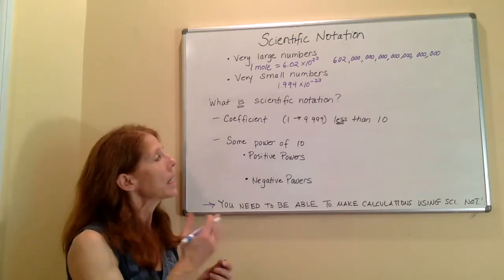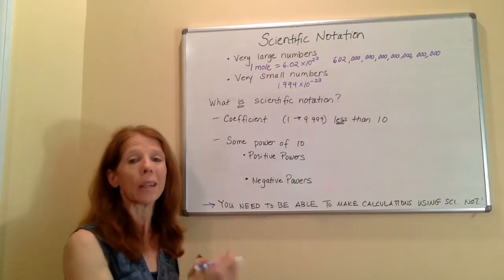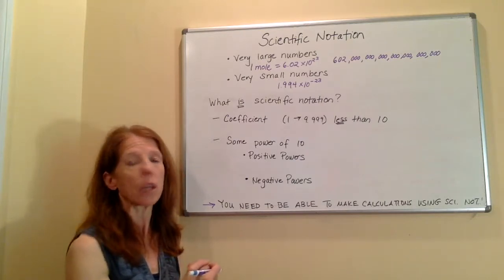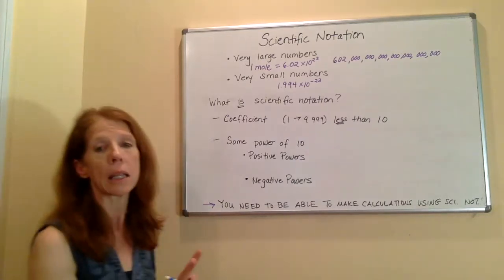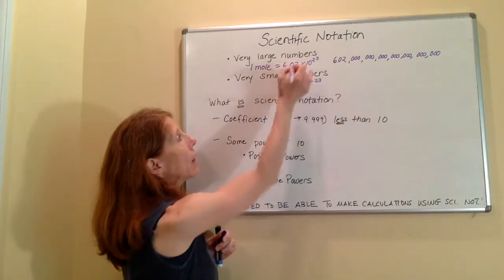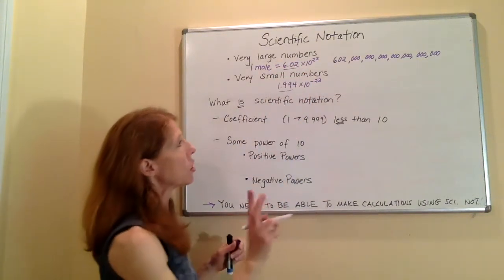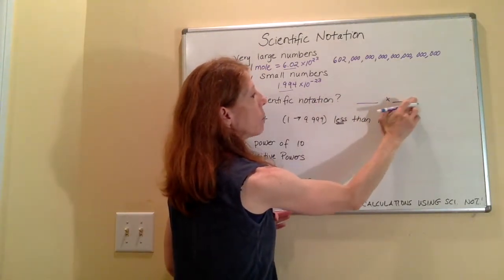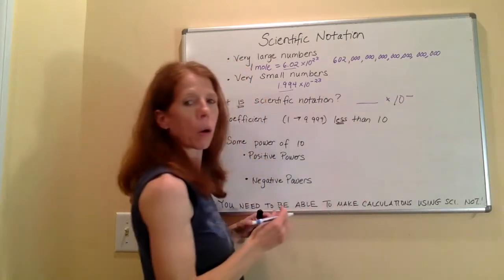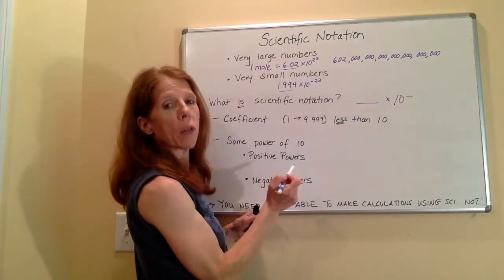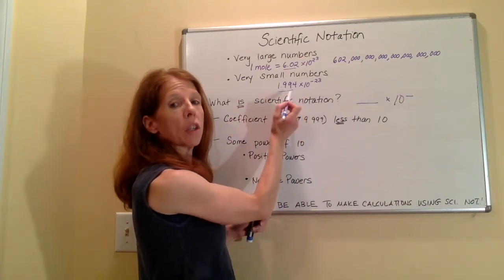Now, the next thing I want to talk about is what is scientific notation exactly? What are the parts and pieces of something in scientific notation? So there's two pieces to scientific notation, basically. You have a coefficient. That is the number that is before the times sign. Scientific notation has two pieces to it. You have some number times 10 to some power. So in the numbers I've already written, 6.02 would be the coefficient of that one. 1.994 is the coefficient of this one.